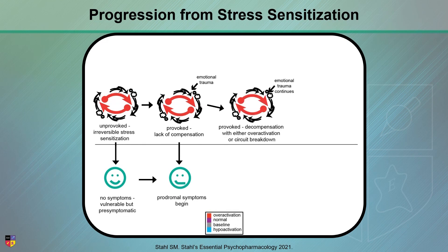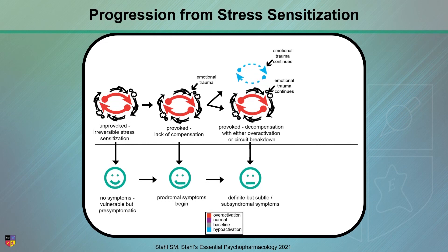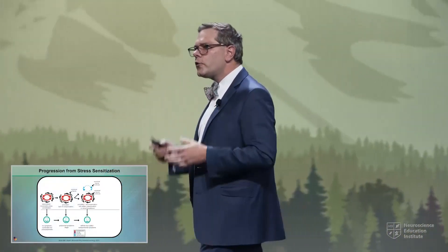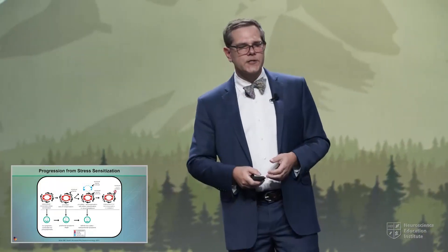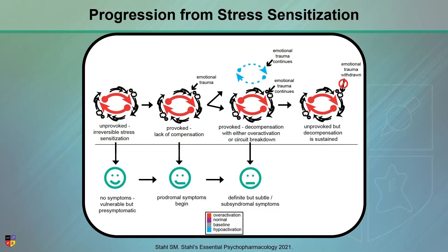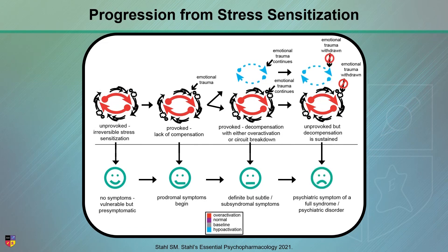And then, over time, if the emotional trauma continues, we can have several scenarios. One is further dysregulation of that circuit, which may produce still subsyndromal symptoms — not necessarily full syndromic post-traumatic stress disorder. However, in time, for a proportion of our kids, what we see is that even in the absence of that withdrawn trauma, we still have a decompensated circuit that probably results in persistent symptoms.